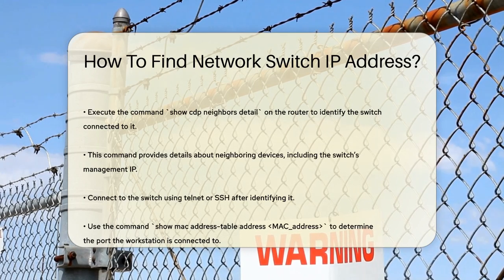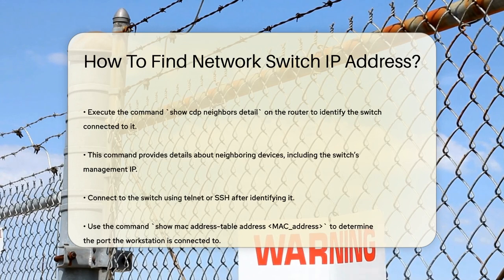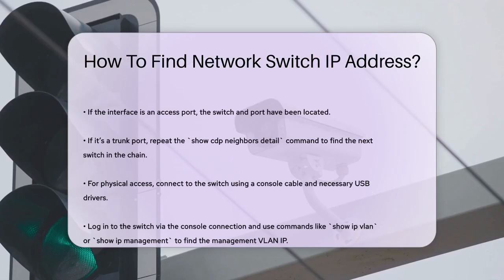If the interface is an access port, you've found the switch and the port. But if it's a trunk port leading to another switch, you'll need to repeat the process by using 'show CDP neighbors detail' again to find the next switch in the chain.